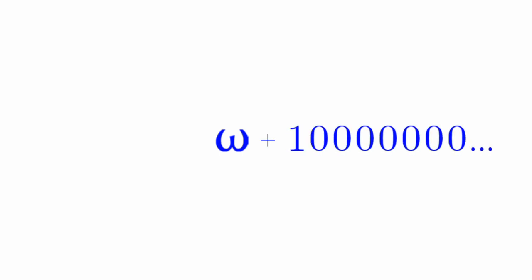We can have omega plus 2, omega plus 3, omega plus 4, so on and so forth. And then we have our next limit, which is omega plus omega, which can also be written as omega times 2. I'll leave this for the next video.